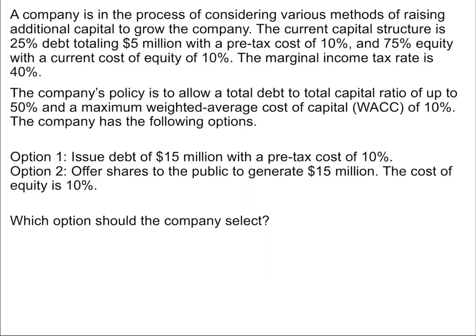We have a question that leads us down a path, but we'll read the question and work through the information. A company is considering various methods of raising additional capital. The current capital structure is 25% debt totaling $5 million with a pre-tax cost of 10%, and 75% equity with a current cost of equity of 10%. The marginal income tax rate is 40%.